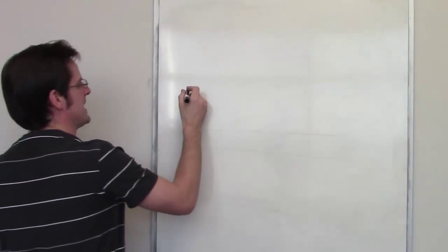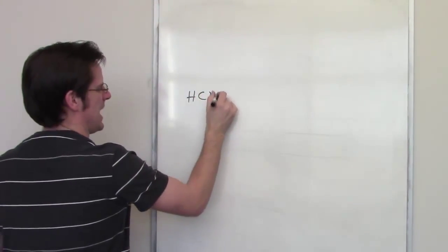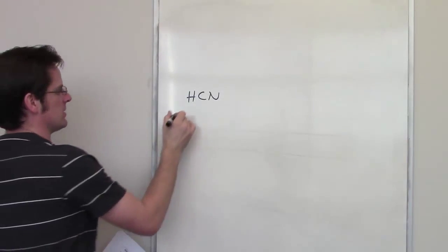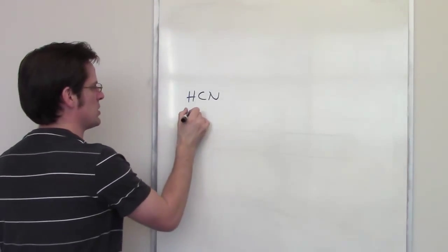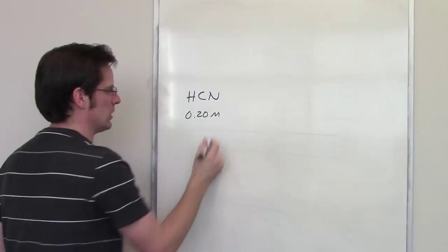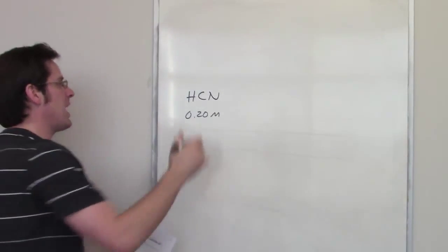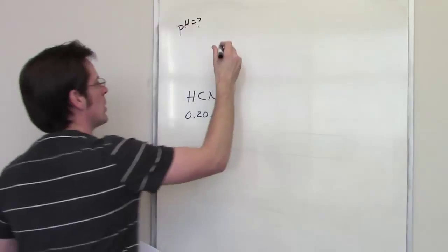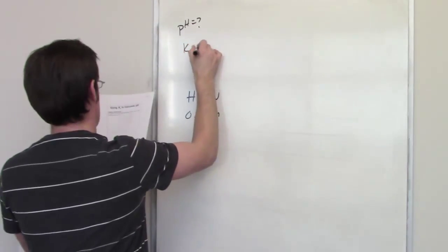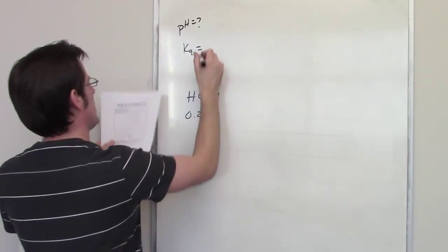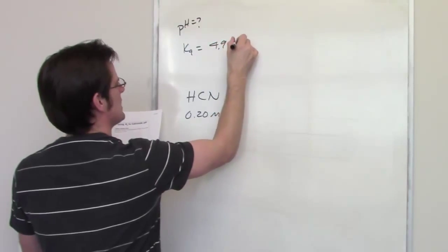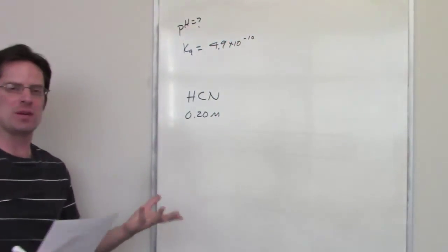In this problem, we're given a weak acid, hydrocyanic acid HCN, and we're given an initial concentration of 0.20 molar. We're asked to calculate the pH, and we're also given the Ka value for this weak acid as being 4.9 times 10 to the negative ninth. How do we determine the pH?